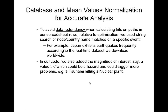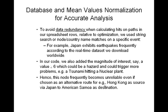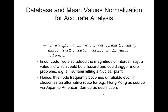For example, a tsunami hitting a nuclear plant. Hence, this node frequently becomes unreliable even if chosen as an alternative route — for example, Hong Kong as a source via Japan to American Samoa as a destination.